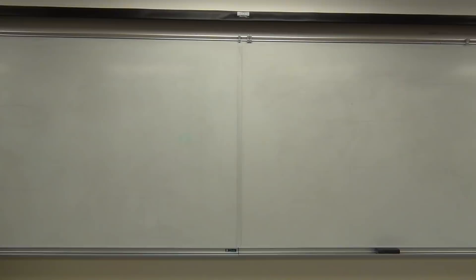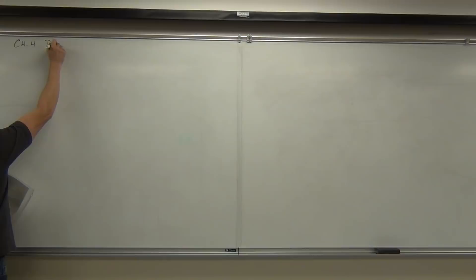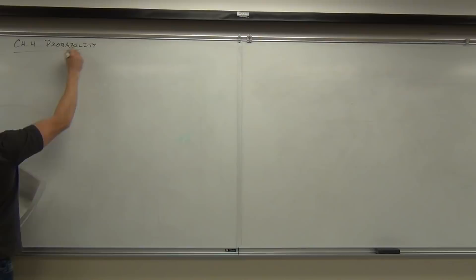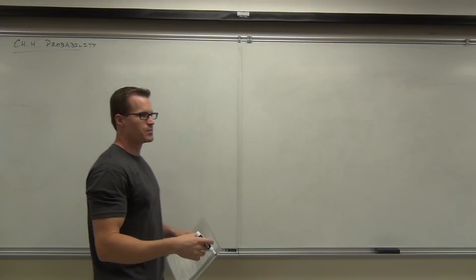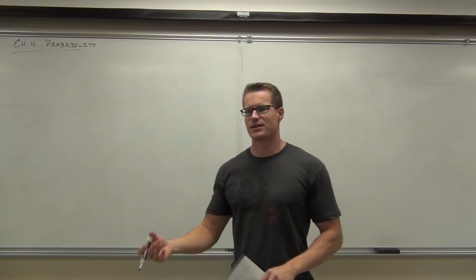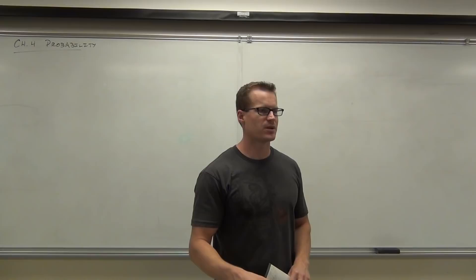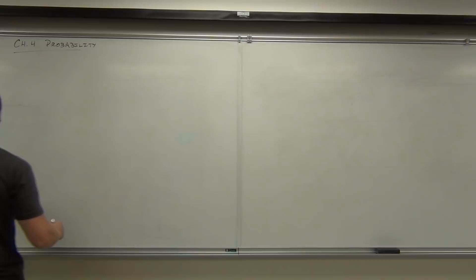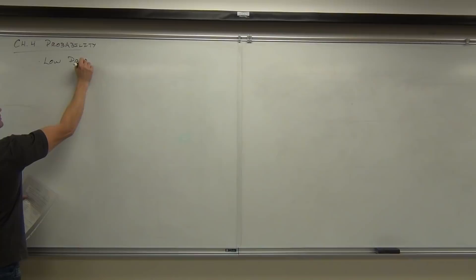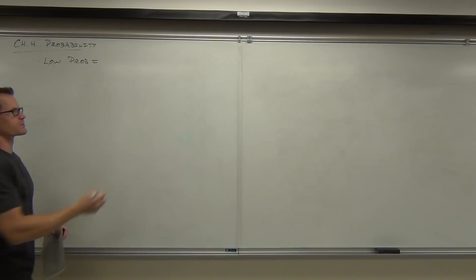So we're talking about probability — this is our transition from descriptive statistics into inferential statistics. This is chapter 4. Probability is the basis for making decisions about our data. It's based on this idea: if something has a low probability, that means its occurrence is going to be rare. So if something has a low chance of happening, you say it's probably not going to happen. Low probability means rare or unusual occurrences.